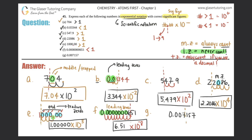Letter G: 0.007157. The new decimal goes between the 7 and the 1. Bunny hopping there takes three hops — times 10 to the third. This number is less than one, so it's a negative three. The zeros in front are leading zeros, and leading zeros never count, so we don't include them. Final answer: 7.157 times 10 to the negative three. Include all non-zero digits always.